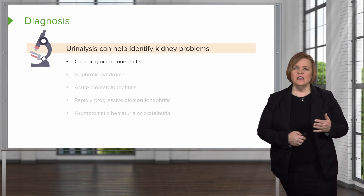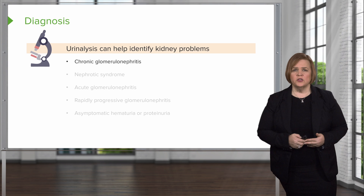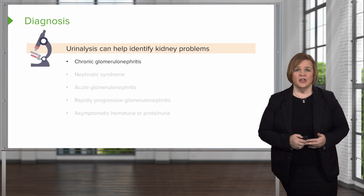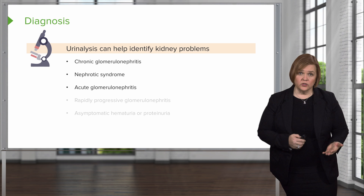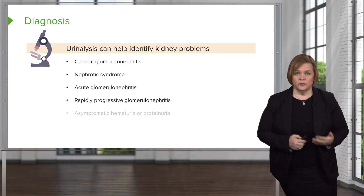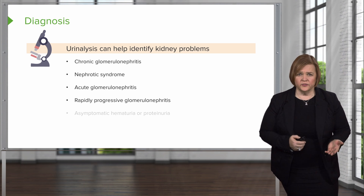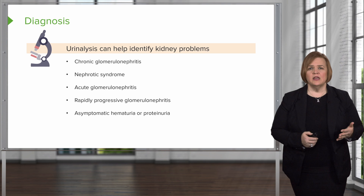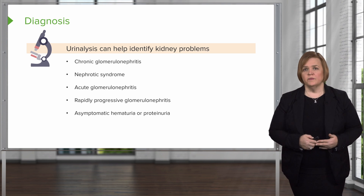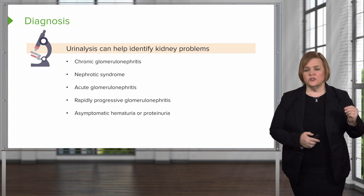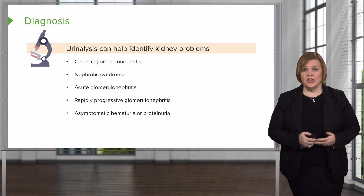We can diagnose some kidney problems with a urinalysis, like chronic glomerulonephritis, nephrotic syndrome, acute glomerulonephritis, rapidly progressing glomerulonephritis, or asymptomatic hematuria or proteinuria. These diagnoses can be hinted at or supported by looking at a urinalysis.